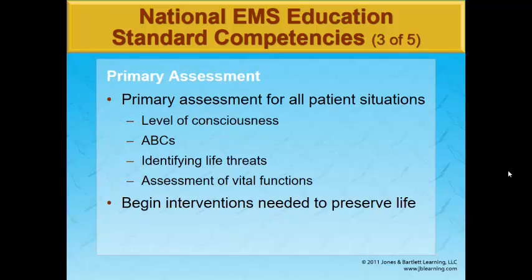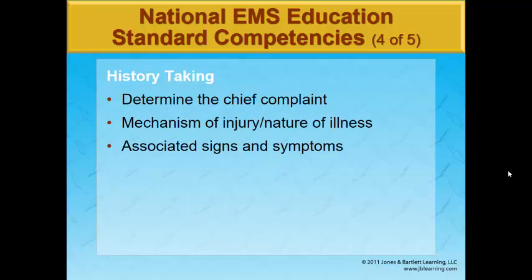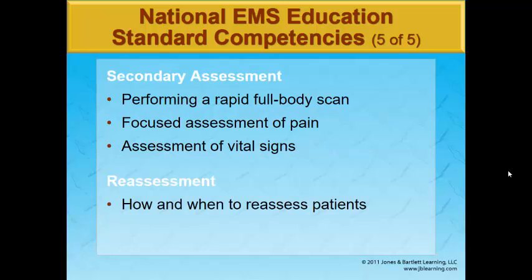It's going to start with a primary assessment. Your primary assessment is your AVPU ABCs. Level of consciousness — we look at: are they awake, responsive to verbal, painful, or completely unresponsive? Then your ABCs: airway, breathing, circulation. We're going to identify life threats and treat those as we go. We're going to get a history using the SAMPLE acronym — S-A-M-P-L-E — which helps us determine more information about that chief complaint. We look at mechanism of injury or nature of illness, and associated signs and symptoms.